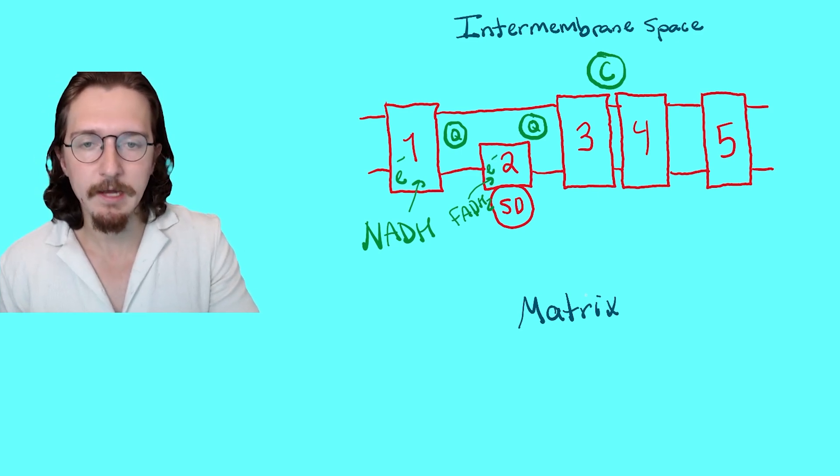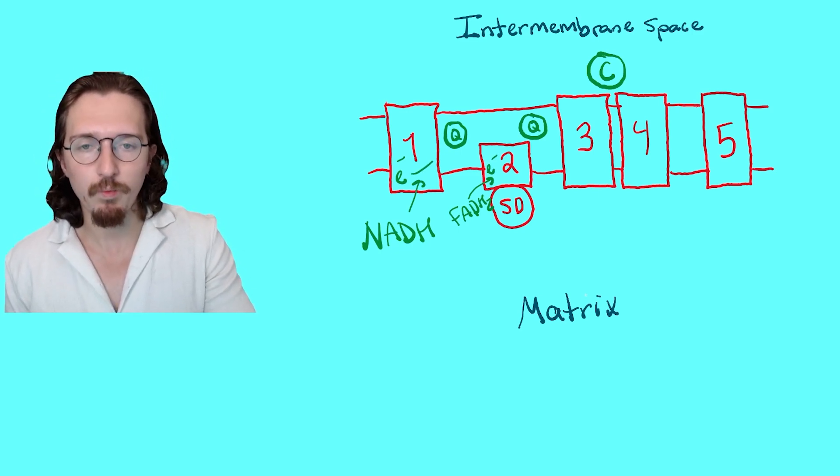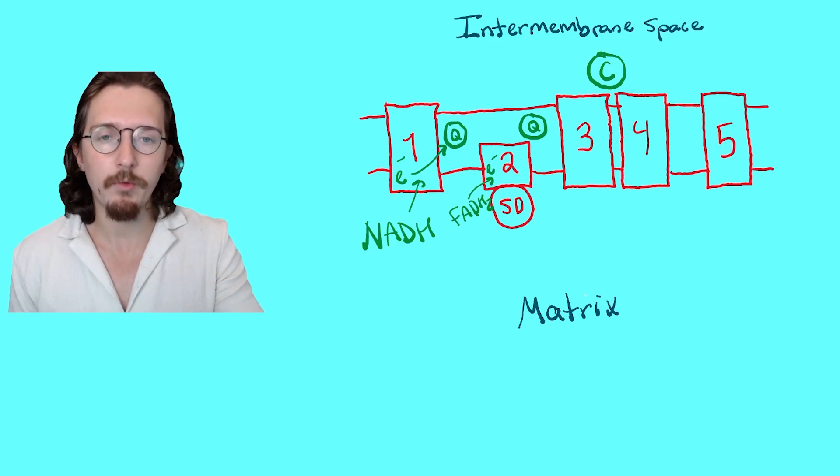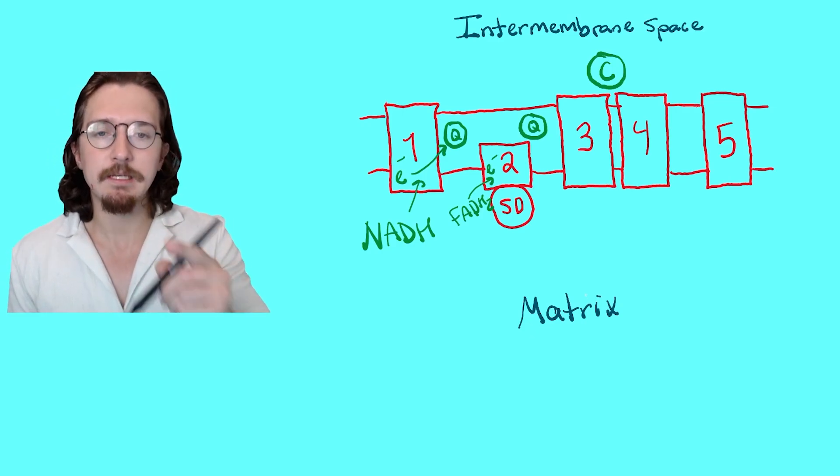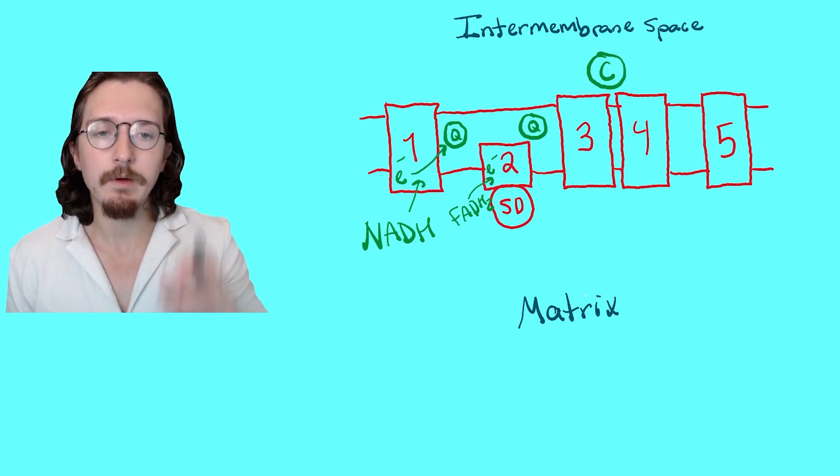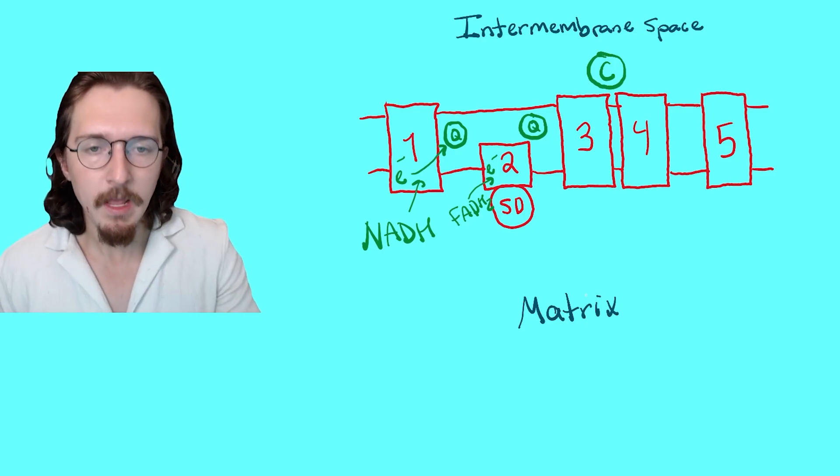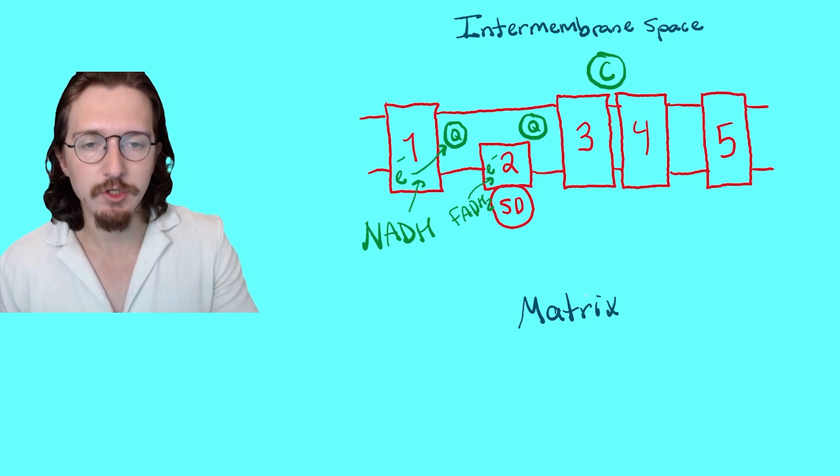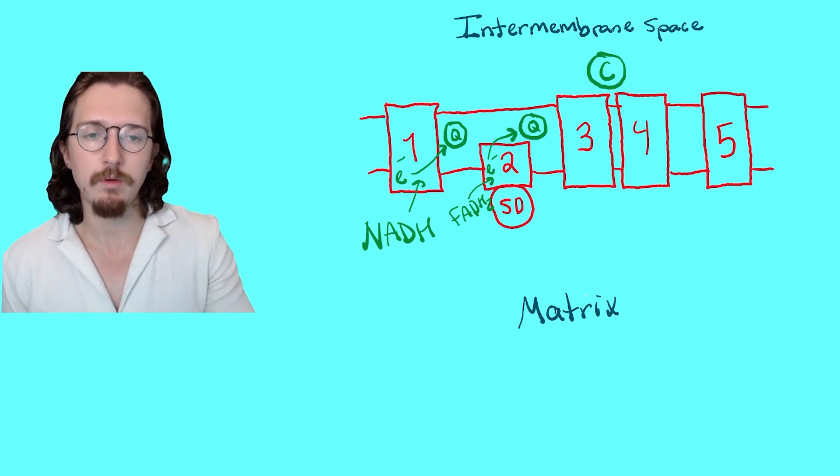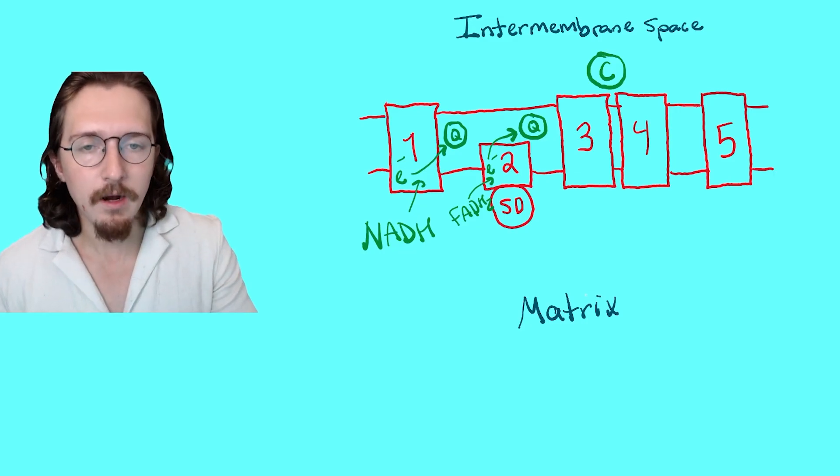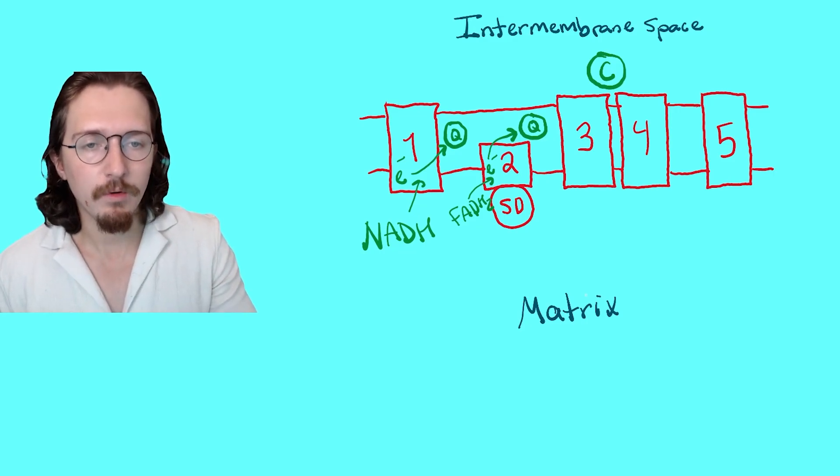Now, what happens to these electrons? Well, these electrons are shunted, first of all, by complex 1 to this molecule in the membrane called coenzyme Q. It's a lipophilic molecule that carries electrons in the inner membrane, and the same thing will happen with these electrons from complex 2. They will also go to a molecule of coenzyme Q, and ultimately, coenzyme Q will deliver these electrons to complex 3.